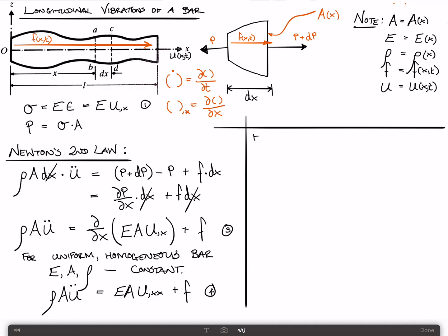We can then look at the free vibration problem, which means that the externally applied load is 0. So f equals 0. We end up with rho A u double dot is equal to E A u comma xx. The A's cancel. And dividing both sides by rho, u double dot equals c squared u comma xx, where c squared is equal to E over rho. Let's call this equation 6.